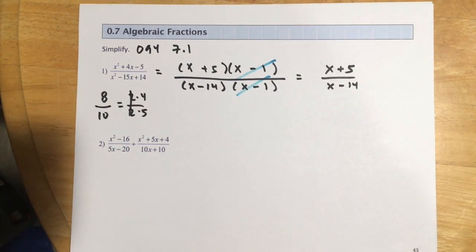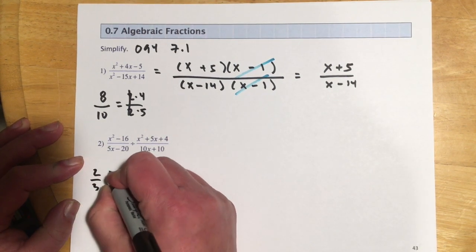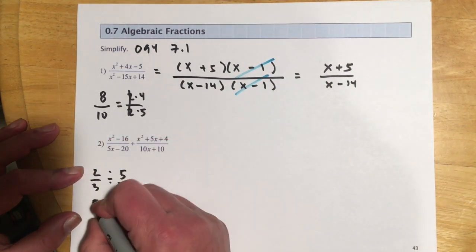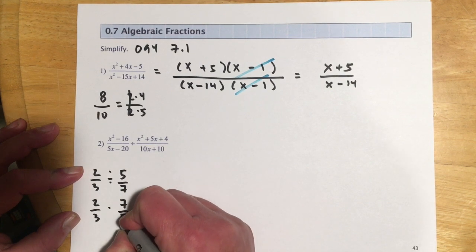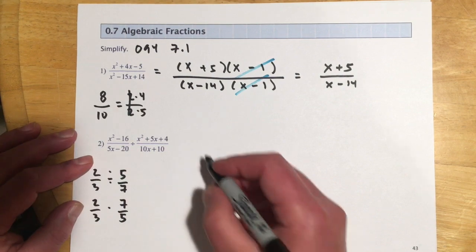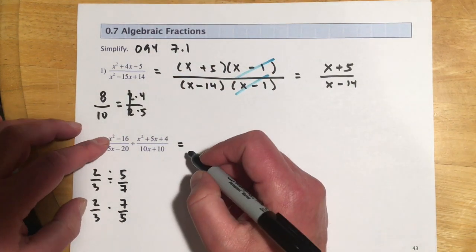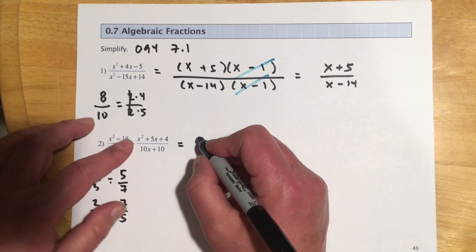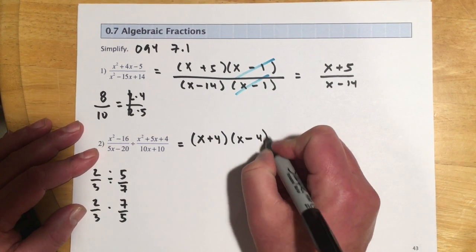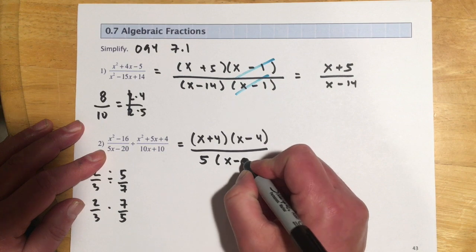The next one is a division problem. Remember with regular fractions — like two-thirds divided by five-sevenths — you flip the second fraction and rewrite as multiplication: two-thirds times seven-fifths. We do the reciprocal and multiply. I'll factor and flip at the same time to save space. The numerator factors as a difference of squares: (x+4)(x-4), and the denominator has a common factor of 5, giving 5(x-4).